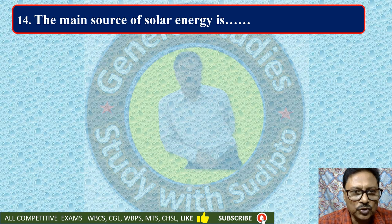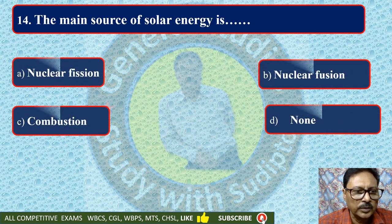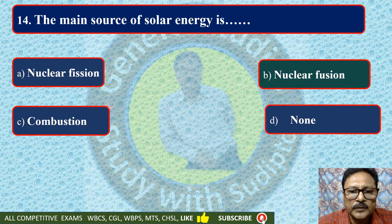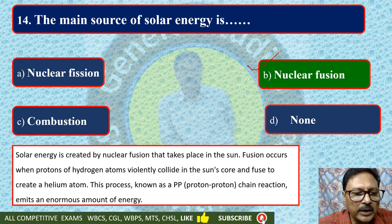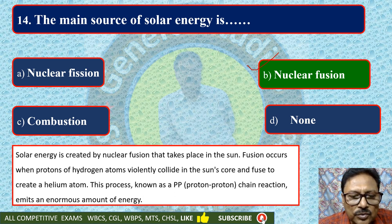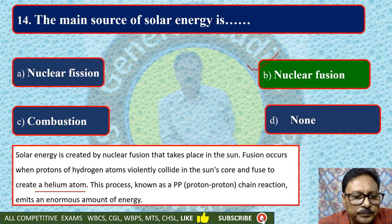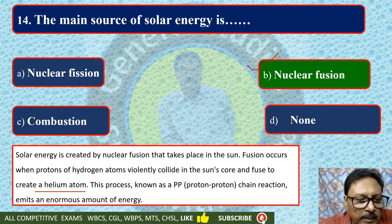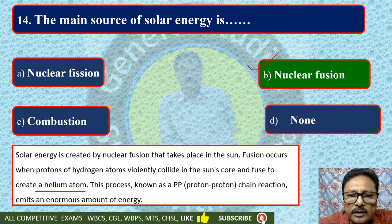The main source of solar energy is — nuclear fusion, nuclear fission, combustion, or none. Nuclear fusion is the correct option. The solar energy is created by nuclear fusion that takes place in the sun. Fusion occurs when protons of hydrogen atoms violently collide in the sun's core and fuse to create a helium atom. This process, known as the PP chain reaction, emits an enormous amount of energy.